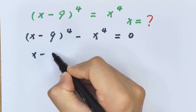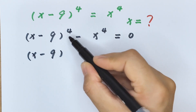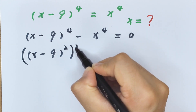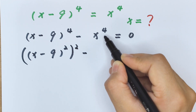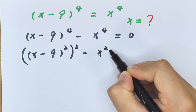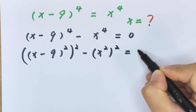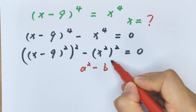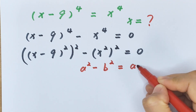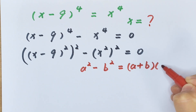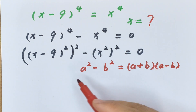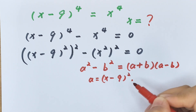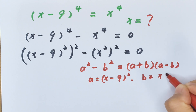Then (x minus 9) to the power of 4 can be written as [(x minus 9) squared] squared, and x to the power of 4 is [x squared] squared, so we have a squared minus b squared equals 0. We know a squared minus b squared equals (a plus b)(a minus b). Here a is (x minus 9) squared and b is x squared.